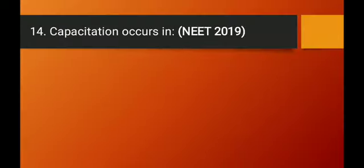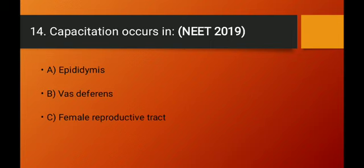Question number fourteen (asked in NEET 2019): capacitation occurs in which structure? Capacitation refers to the second/further maturation of sperms that occurs in the female reproductive tract, just before fertilization. The first maturation occurs in the epididymis. Options A (epididymis) and B (vas deferens) are wrong. Option C — female reproductive tract — is the right answer.